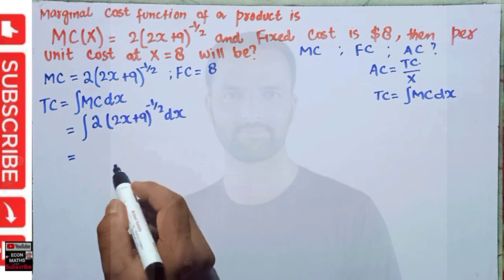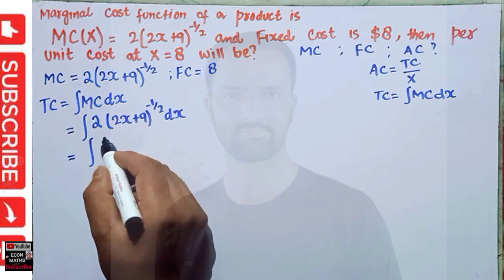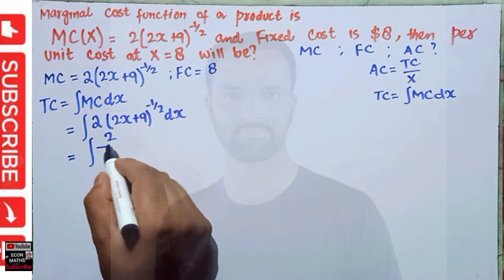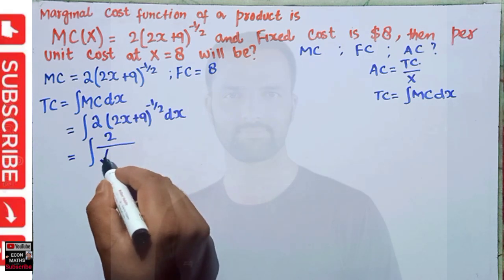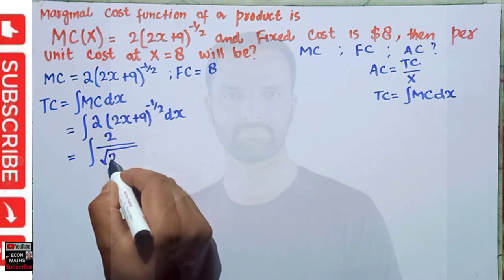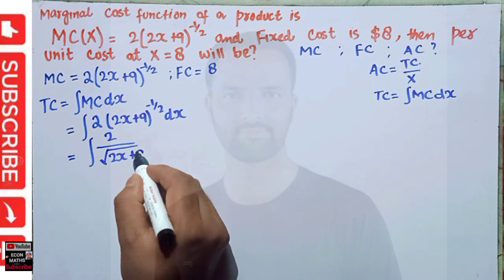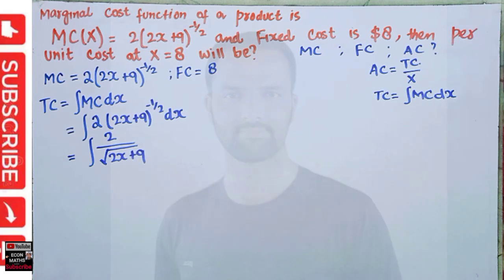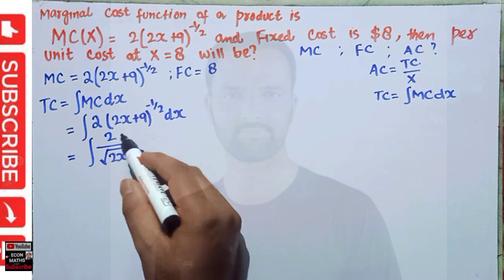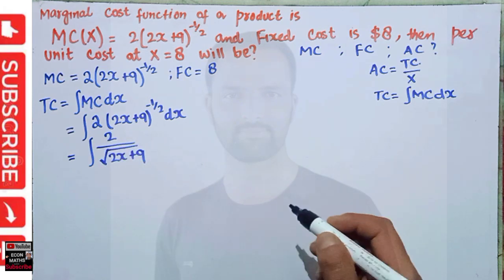We can rearrange this and write it as the integral of 2 upon the square root of (2x + 9). Since the term has a power of minus 1/2, and x^(1/2) is the same as the square root of x, these are the same things — it was just to clarify.